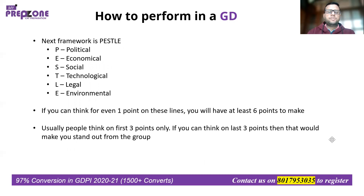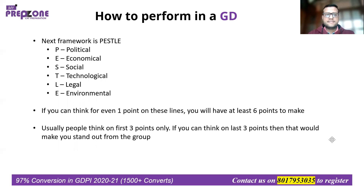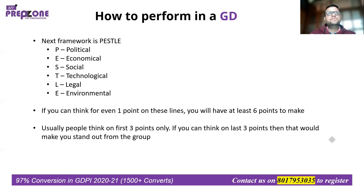The second framework is PESTLE — an acronym for Political, Economical, Social, Technological, Legal, and Environmental. This is a very relevant framework not just for GDs but for your WAT and PI as well. If you can have just one point on each of these six aspects, you have at least six points. Most people only think on the first three — Political, Economical, and Social — but thinking on the last three earns you brownie points and makes you stand out from the group.